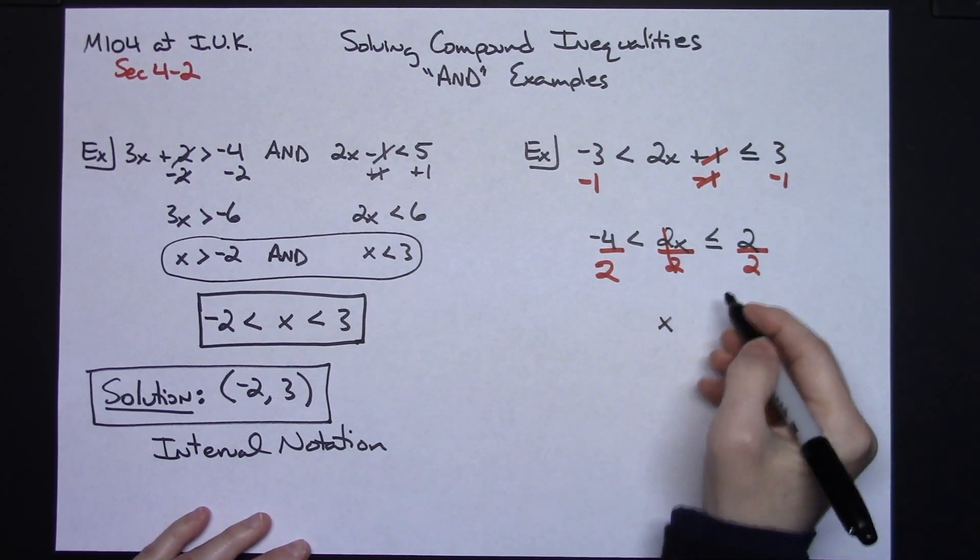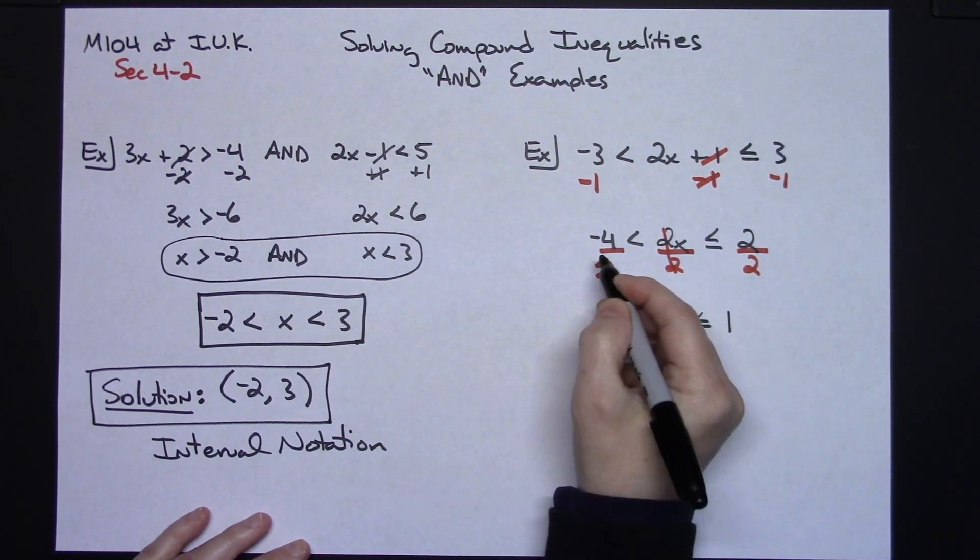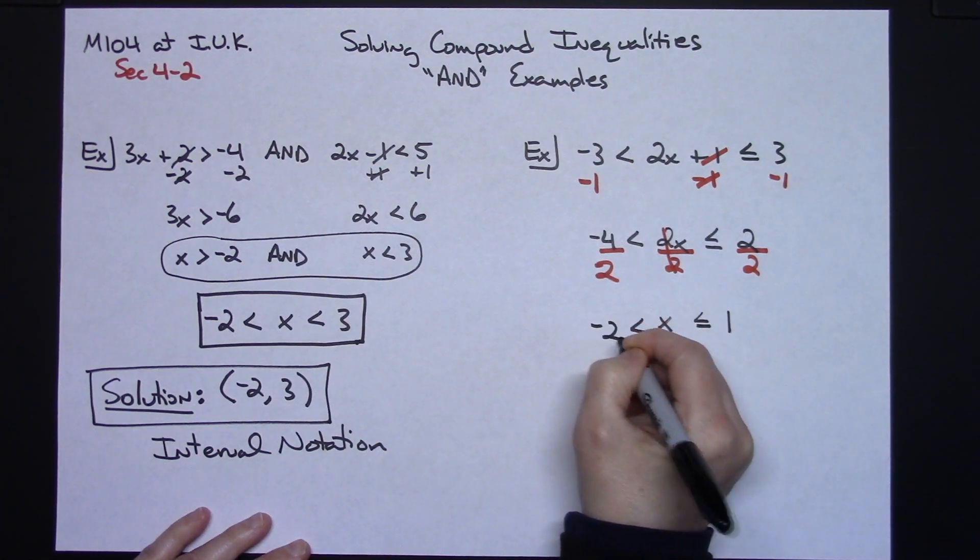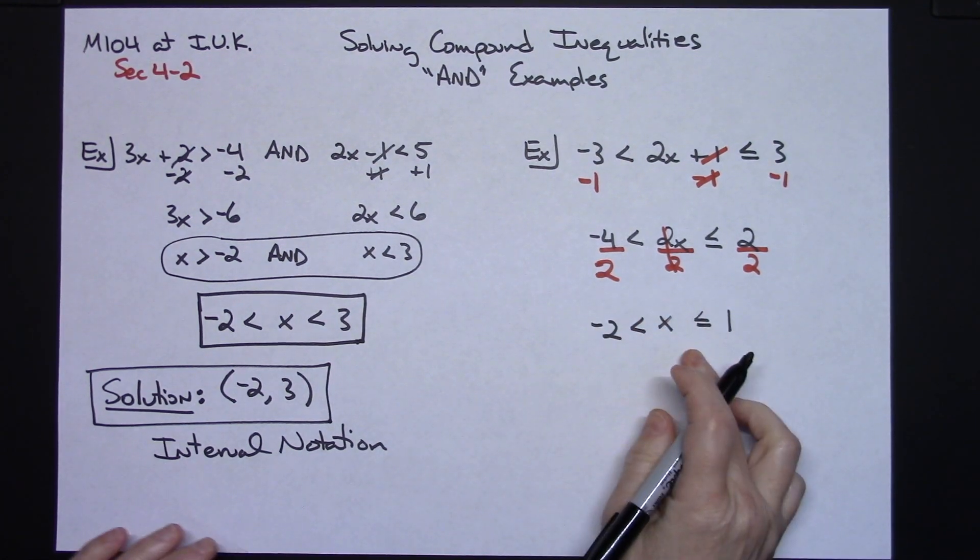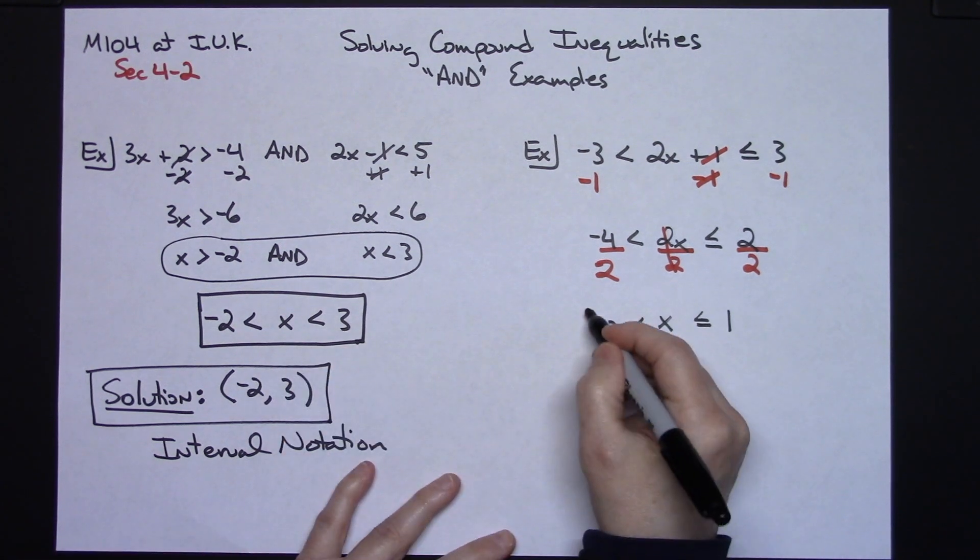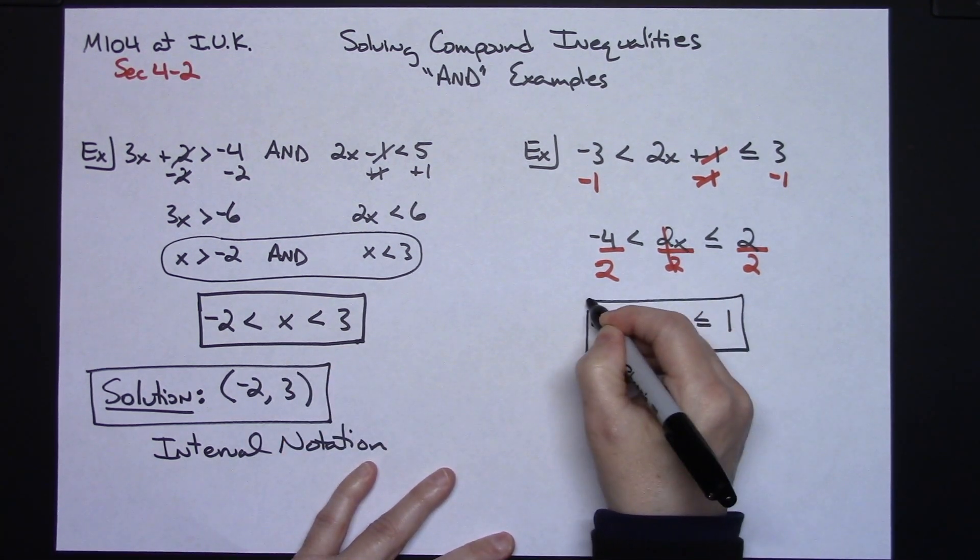Less than or equal to, going ahead and dividing that, I get a 1. Going ahead and dividing this, I get a negative 2. So there is the compound inequality just from algebraically working it out.